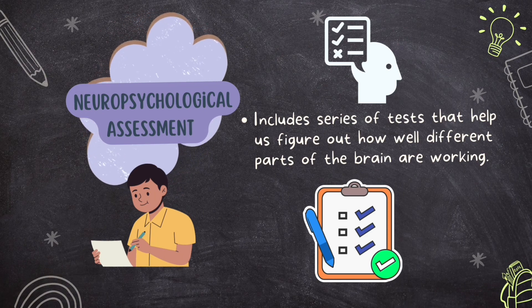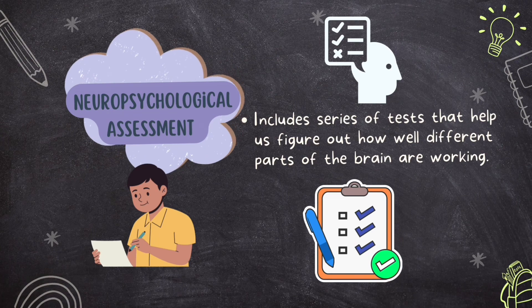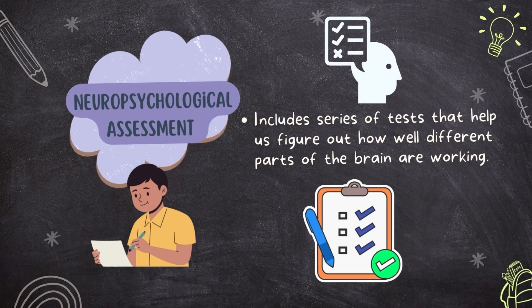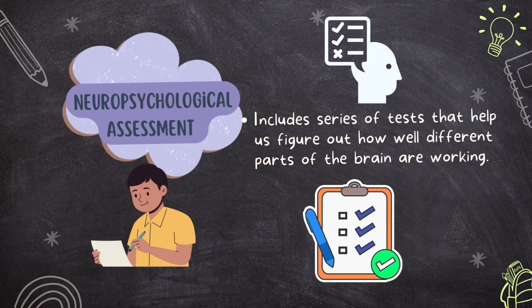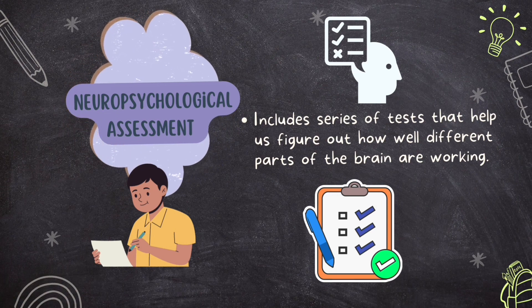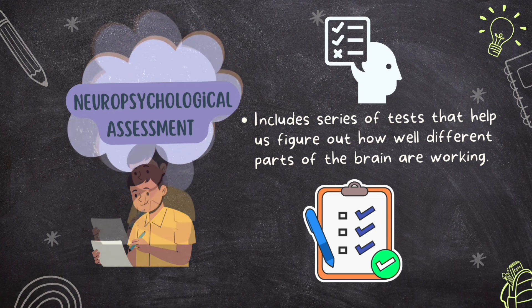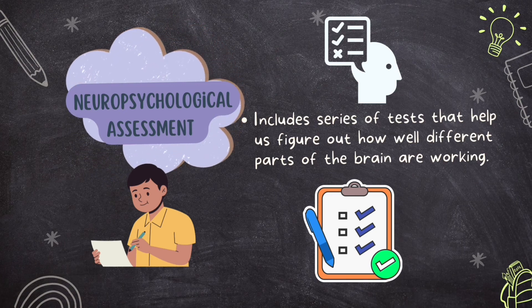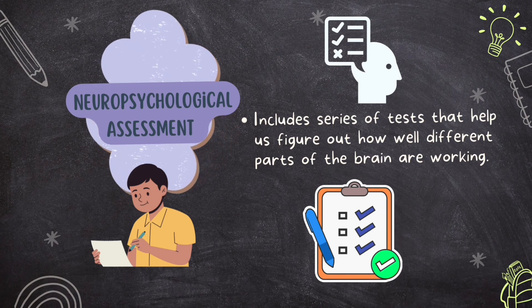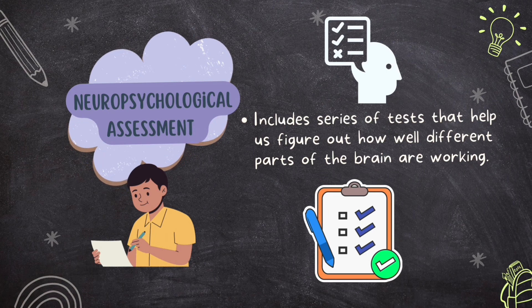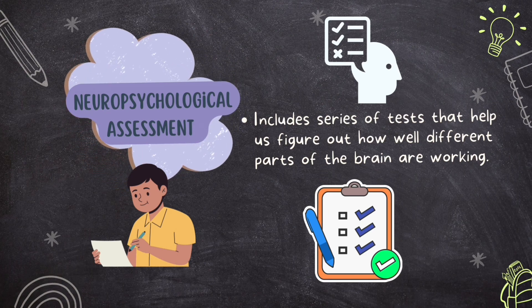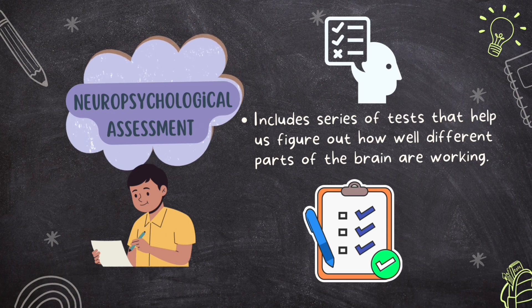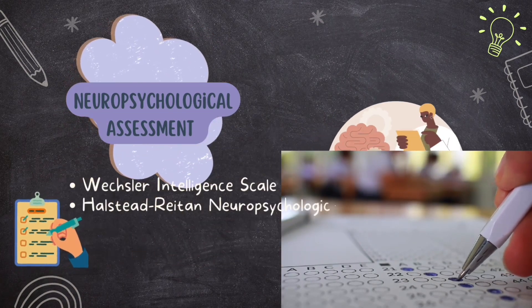The eighth method is neuropsychological assessment. When someone has a brain injury, scientists use this method to understand how it affects their behavior and thinking. It's like a series of tests that evaluate how well different parts of the brain are working — covering memory, learning, thinking, decision making, language, and more. Answers are scored and evaluated to give a complete picture of brain functioning. These assessments don't just diagnose problems; they also plan treatment and can be used to monitor whether treatment is working through reassessment.